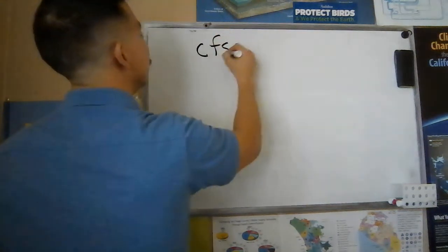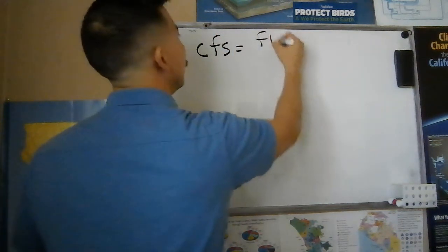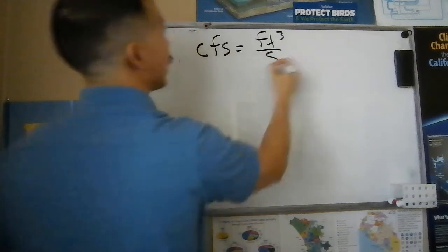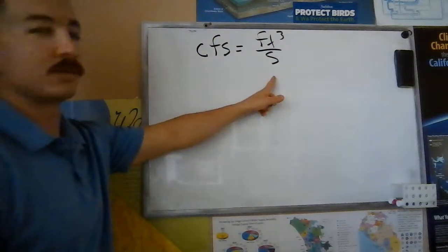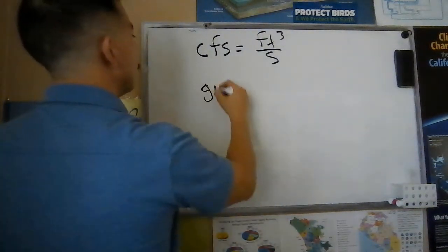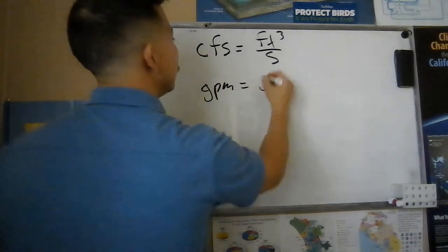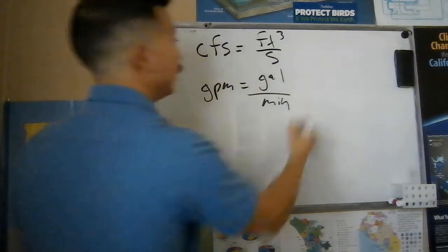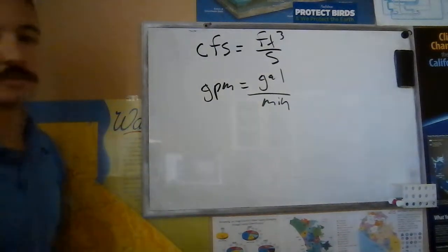So remember that CFS is equal to cubic feet per second. We want to be writing it like this during these conversions. Remember that GPM is gallon per minute. We want to write it like this when we're doing these conversions.